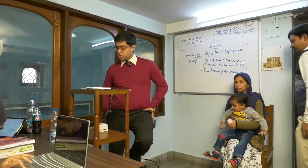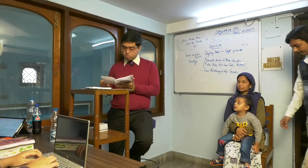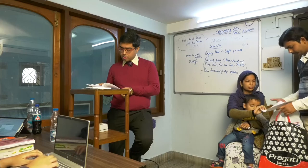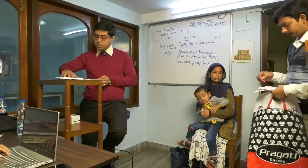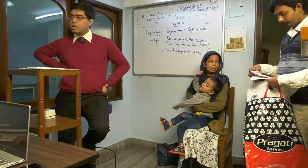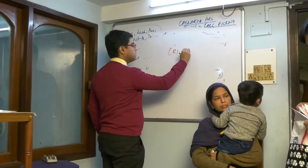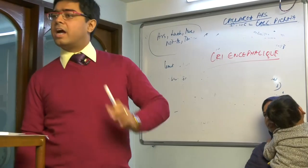Our first case for today is a child who is three years old. He came to us in May last year with hyperactivity, crying, and it used to be a shrill cry. He is very stubborn. He shrieks quite a lot — we call that cry encephalic. It is sometimes even shriller, like a cerebral cry — that kind of very shrill cry, which is associated with cerebral involvement.